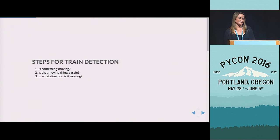So the three main steps for this algorithm are, first of all, let's figure out is something moving. If there is something moving, is that a train or train-like? And then if it is a train, in what direction is it moving? So I'm going to go through these three steps.